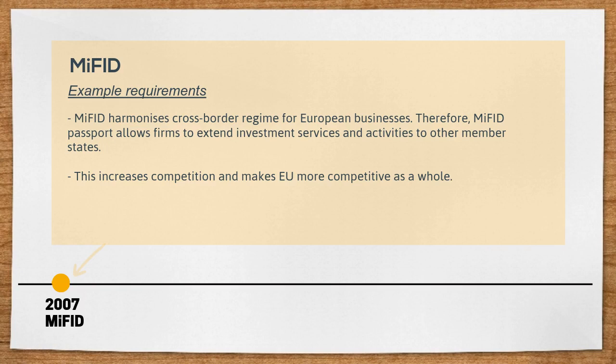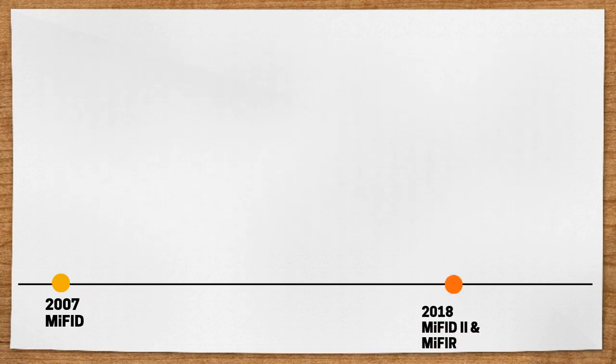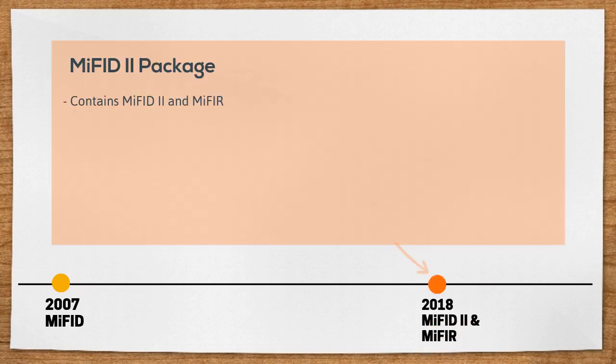MiFID became increasingly outdated with the use of technology, and there are gaps to be filled in the use of financial markets. In light of the financial crisis, and to strengthen investor protection, the MiFID II package — containing MiFID II and MiFIR — will become effective in January 2018.